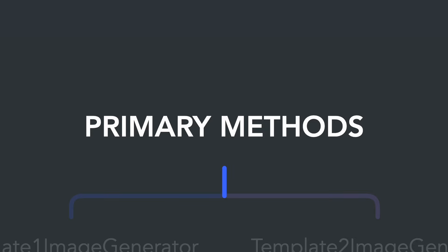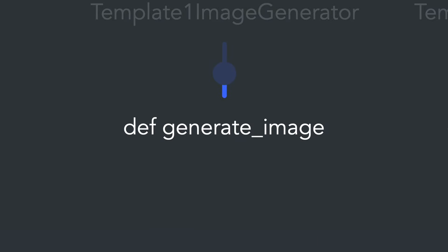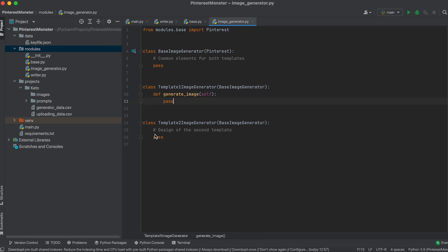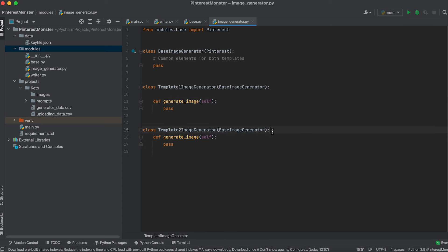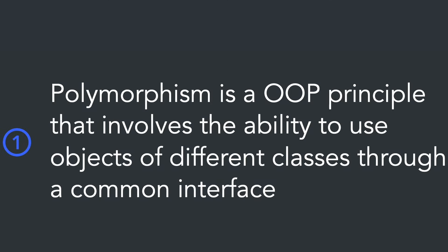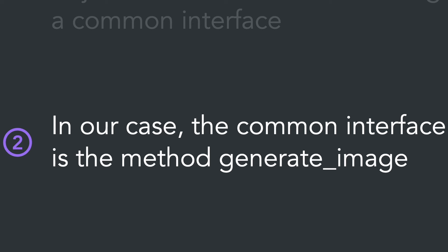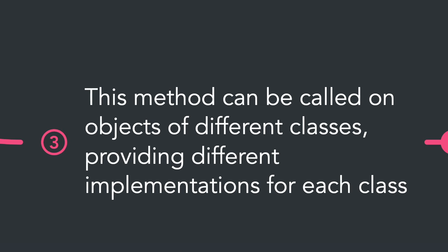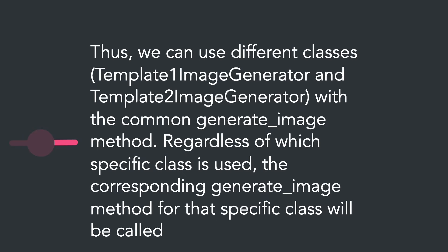Now it's time to define the main methods of our classes. In each template class, we need a primary public method that will trigger image generation. This leads us to the OOP principle called polymorphism — a principle that allows objects of different classes to be used through a common interface. In our case, the common interface is the method generateImage, which can be called on objects of different classes, providing different implementations for each.